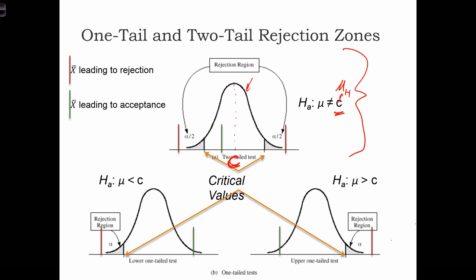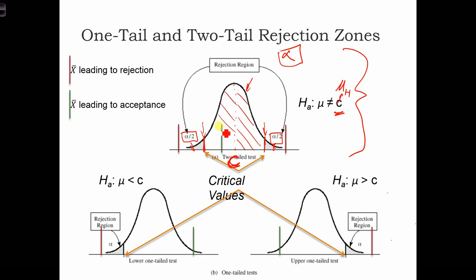We are going to have a confidence interval, and the width of this confidence interval is going to be determined by alpha, the level of significance. In a two-tailed test, we place alpha over 2 — that much probability — in each of the two tails. So the total area outside the confidence interval equals alpha. Based on that, we know how to find the z-scores that define these two boundary locations.